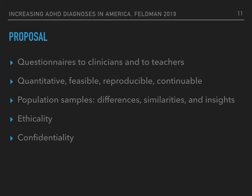Today we are proposing questionnaires to be sent out to clinicians and teachers. These questionnaires will be quantitative, feasible, reproducible, and continuable. They will be quantitative because we estimate about 600 in each group — clinicians and teachers — to be statistically significant, which is the number of surveys we will send out. Feasible means it can be done relatively easily. Reproducible means it can be done again with a different population set, expecting relatively similar results. Continuable means we could add on to this study if results are not conclusive or we still need more information.